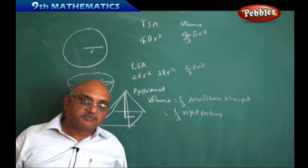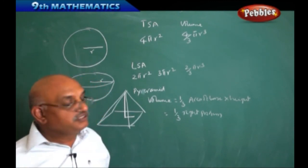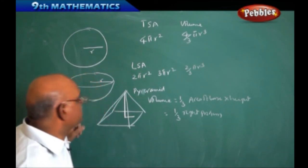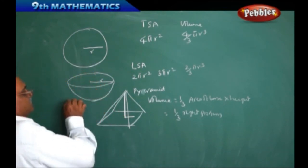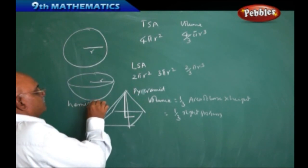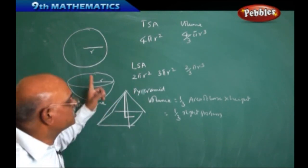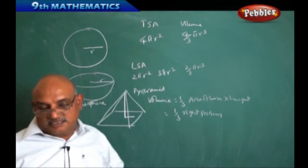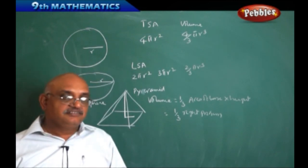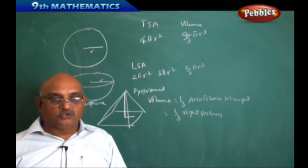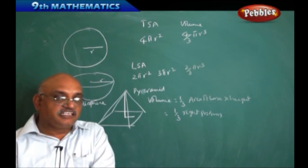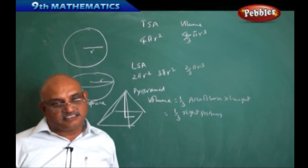In this chapter, we are going to deal with pyramids, hemispheres, spheres, cylinders, cuboids, cubes, and cones. We are going to think about their volumes and surface areas. First, we will discuss certain problems.